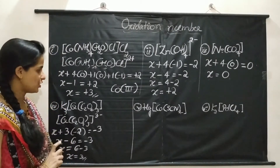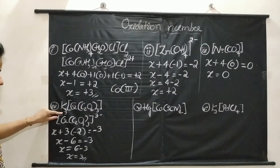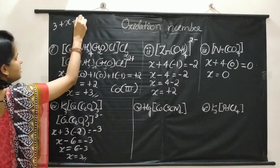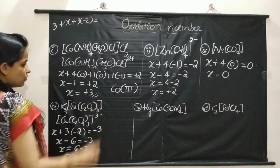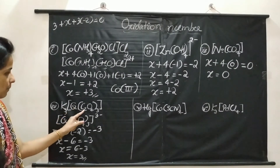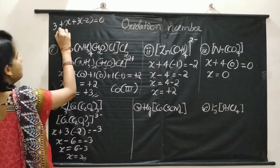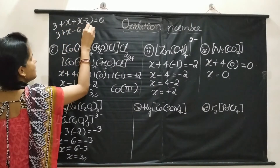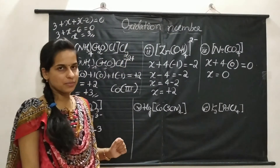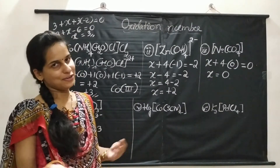There is another method to calculate the oxidation number by including the counter ions as well. For this example, considering the counter ions: 3 (for 3 K⁺) plus X (oxidation number of central metal) plus 3 times (minus 2) equals 0. So 3 plus X minus 6 equals 0, giving X equals 3. You can decide which method is easier and use that one.